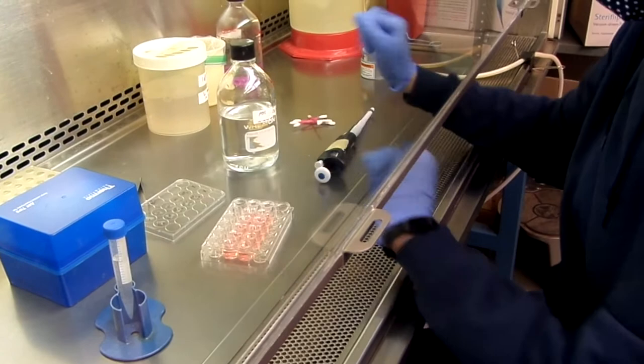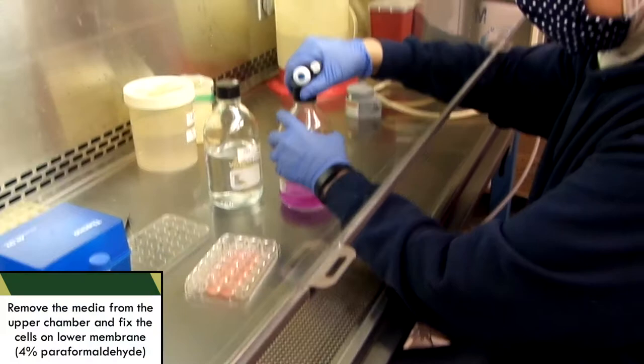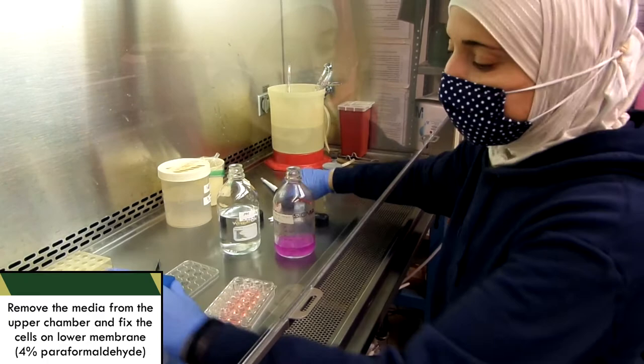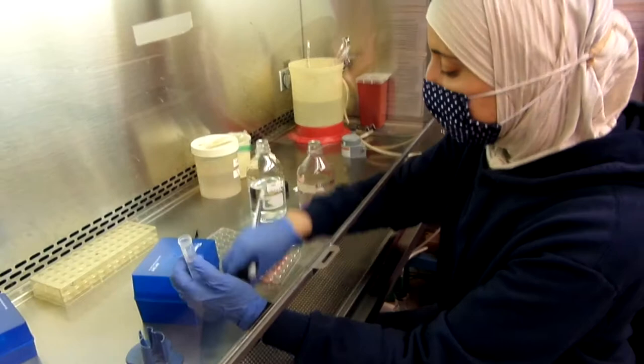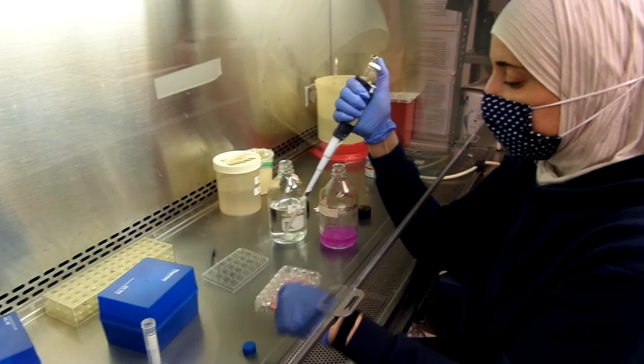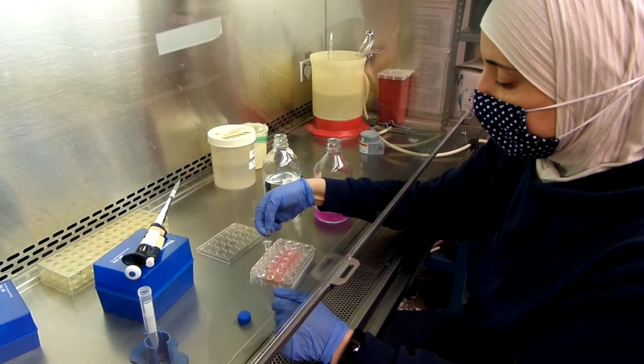Then, what I will do is take out the media in the upper chamber. Then, I'll fix the membrane, the cells on the lower membrane. I have this fixative, which is 4% paraformaldehyde. I will add one ml in these extra wells and move this transwell into the new well that has the fixative. And I'll do this for the remaining transwells.